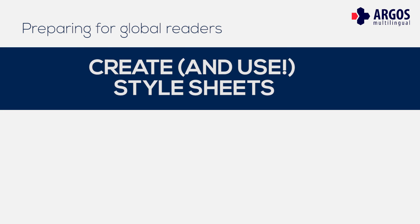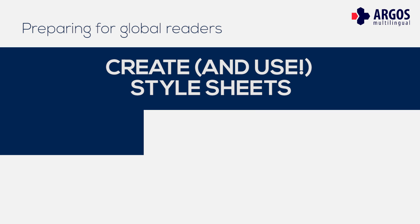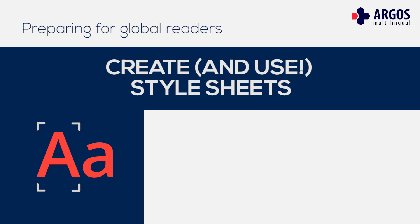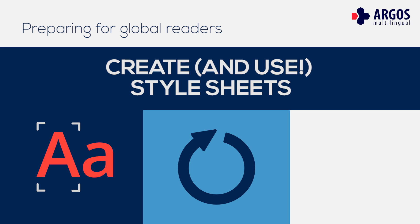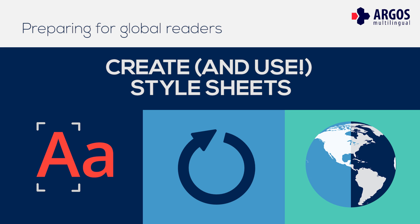Style sheets are one of the most useful tools in DTP. They let you know exactly which fonts and styles you've used in your document and allow you to apply or update complicated formatting in just a few steps. They make it easy to change formatting globally throughout a document, much easier than manually changing your formatting.